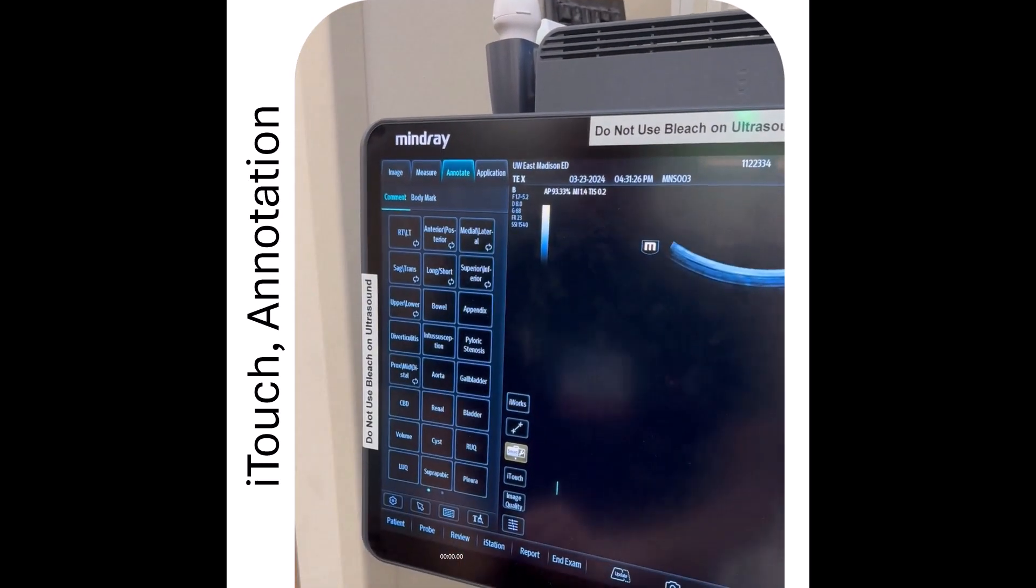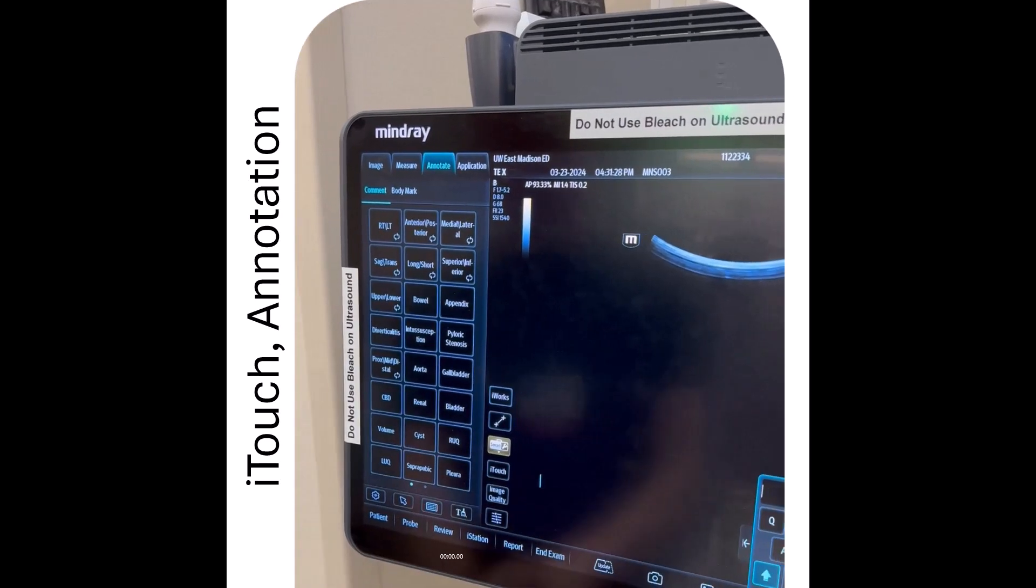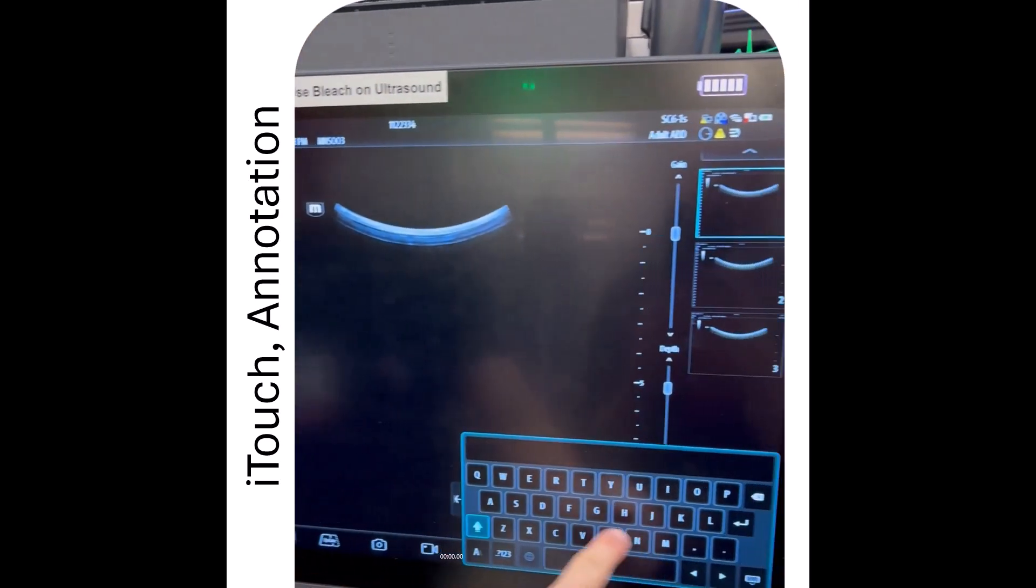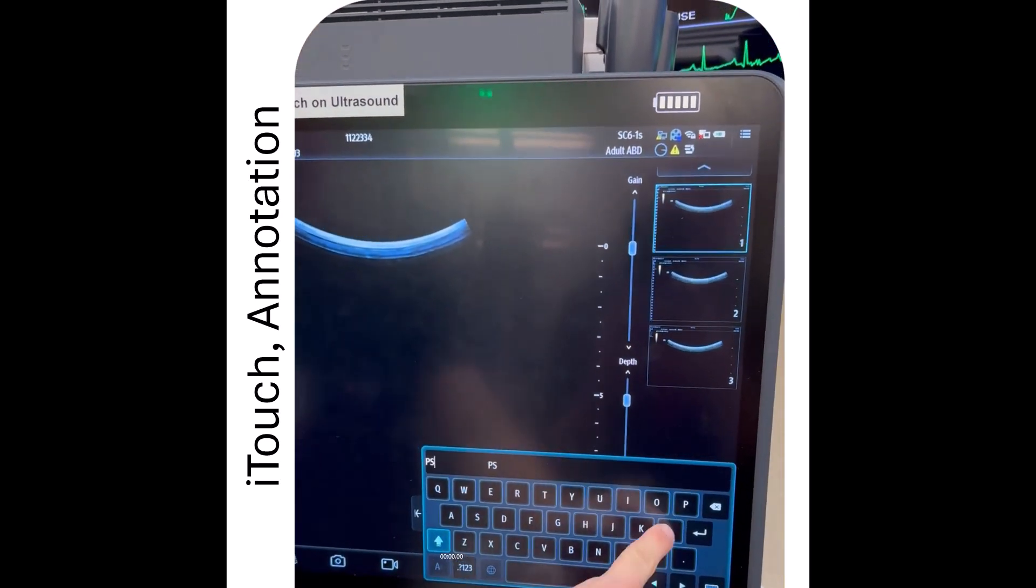To annotate, you're going to click annotate at the top right of the screen. There are some pre-populated things here, but to open up the keyboard, click that keyboard icon, and then label the image however you want.